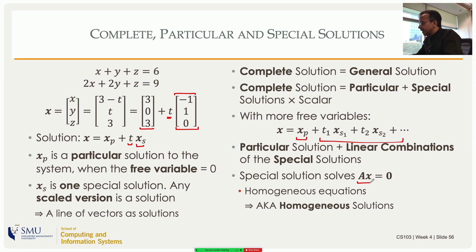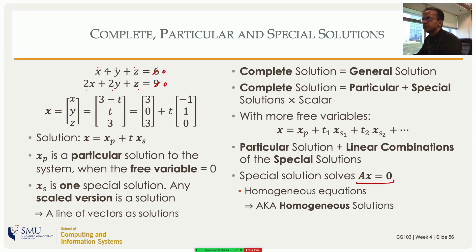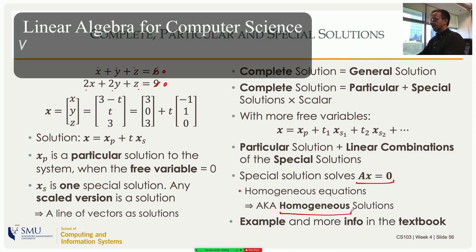The special solutions are solutions to the homogeneous equation Ax = 0. For example, the special solution (−1, 1, 0) satisfies both equations when the right-hand side is zero. This is called a homogeneous system because all terms are of the same order — x, y, z each appear to the first power. Just as x + y is homogeneous of order one, this system is a homogeneous system of equations, and so the special solutions are also called homogeneous solutions.